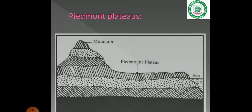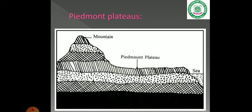The next type is Piedmont plateaus. These are plateaus that have mountains on one side and open area on the other side. We call these Piedmont plateaus.